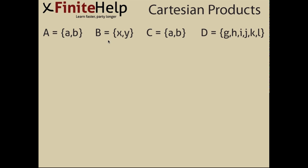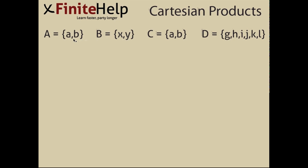Take for example A times B. You would take the first element from A, which is a, match it with the first element in B, which is x, then repeat that process and match the first element a with the second element in B, which is y. So that gives you (a,x)(a,y).